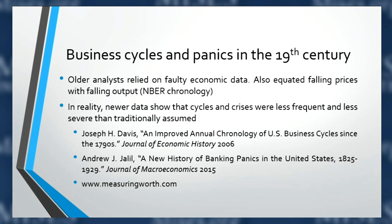Contemporaries would see consumer prices falling and wages falling and conclude people were getting poorer. As we'll see, they generally relied on faulty economic data and often confused deflation with actual economic decline. The NBER — the National Bureau of Economic Research — is the organization in charge of dating expansions and recessions. They still use this old, faulty data and have not revised their business cycle chronologies, even though much more improved data and statistical methods have recently shown that many of these depressions were not nearly as severe as thought.